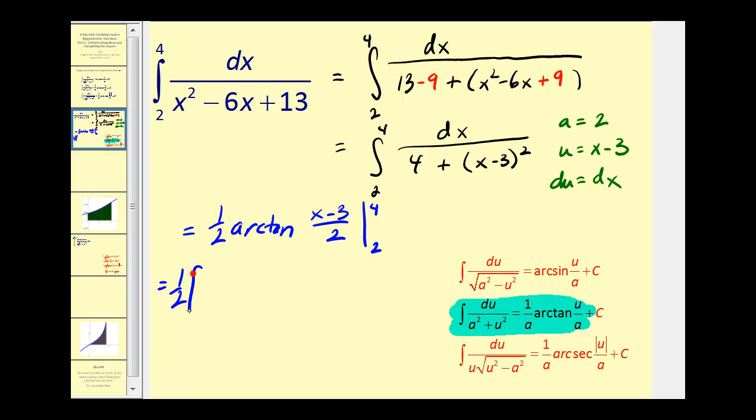So let's go ahead and do that. We'll have 1 half. When x equals 4, we'll have 4 minus 3, that'll be 1 over 2, minus the arctangent. When x is 2, we have 2 minus 3, that would be negative 1 half.